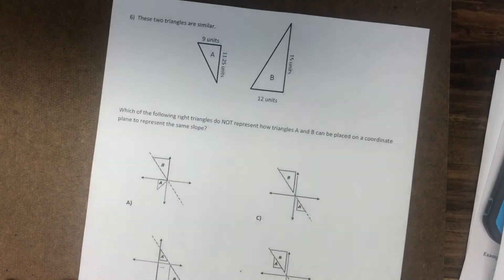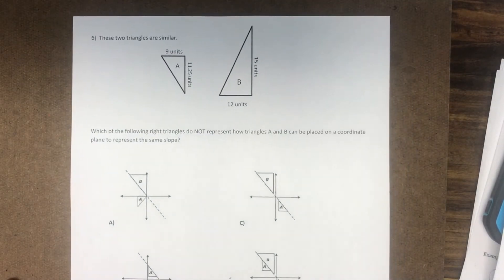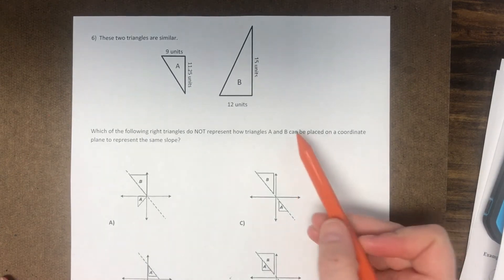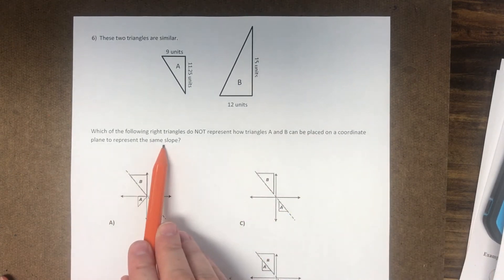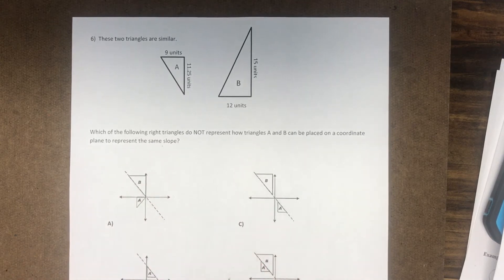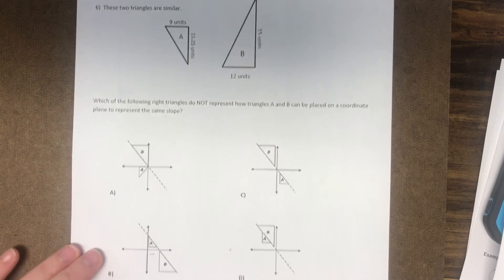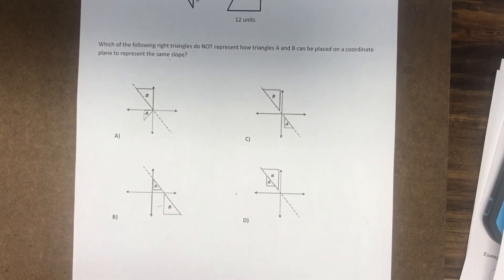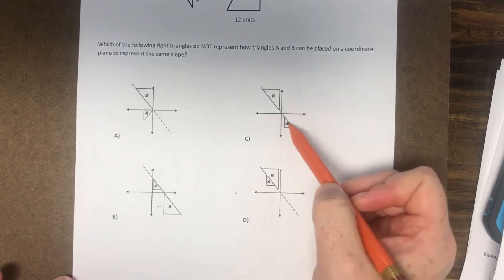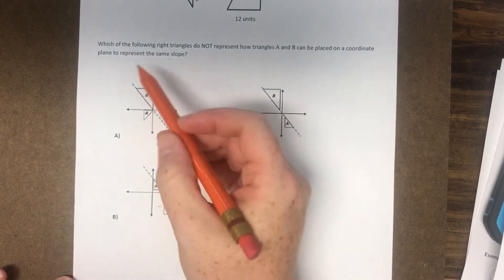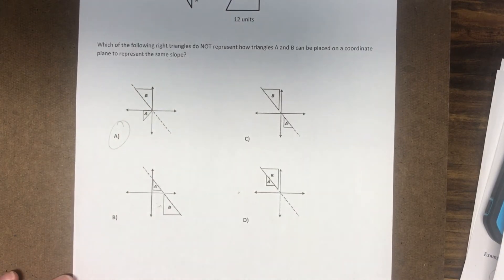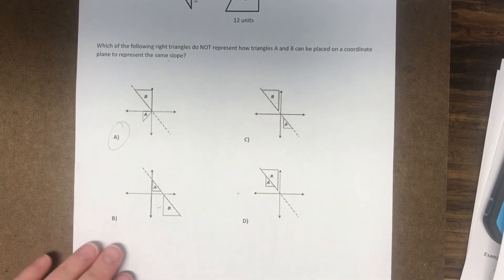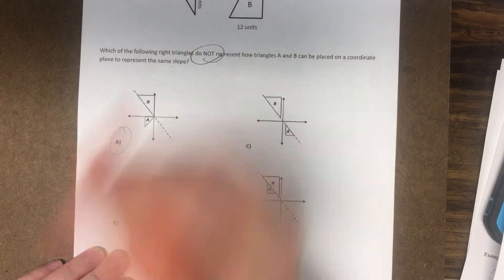Number 6. These two triangles are similar. Which of the following right triangles do not represent how triangles A and B can be placed on a coordinate plane to represent the same slope? So they have to have their hypotenuse on the line to represent the same slope. So clearly there's one that does not have its hypotenuse the same. So hypotenuse, hypotenuse, hypotenuse, nope. So answer choice A is going to be, it does not represent.